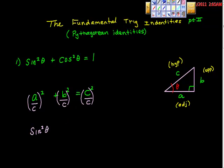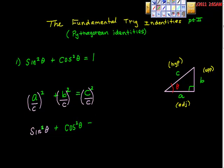And then we have A over C. What's adjacent over hypotenuse? That is cosine, isn't it? Cosine squared theta. Just to be clear, this squared right here is this one right here, and this squared right here is this one right here. When you square something like cosine, you don't write it cosine theta squared — it's cosine squared theta. That's just a formality. And of course, C over C is 1, and 1 squared is 1. So there's my proof of that identity.